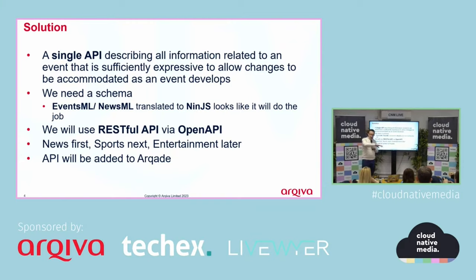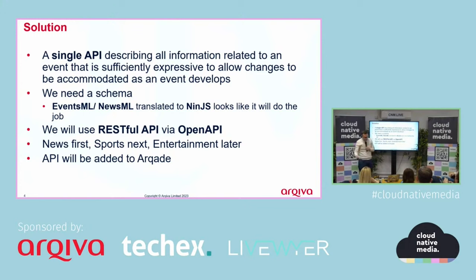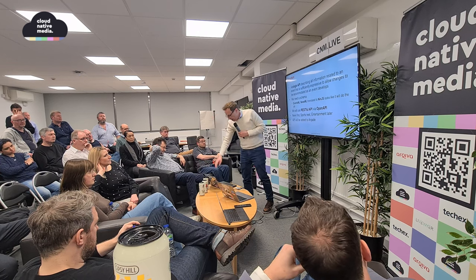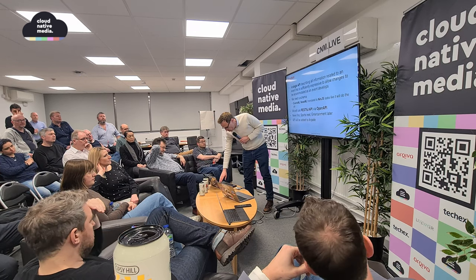Our implementation — the Kivas one — will use a RESTful API using OpenAPI. We're focusing on news first, sports next, and then entertainment. Later we'll be adding it to one of our products called Arcade.